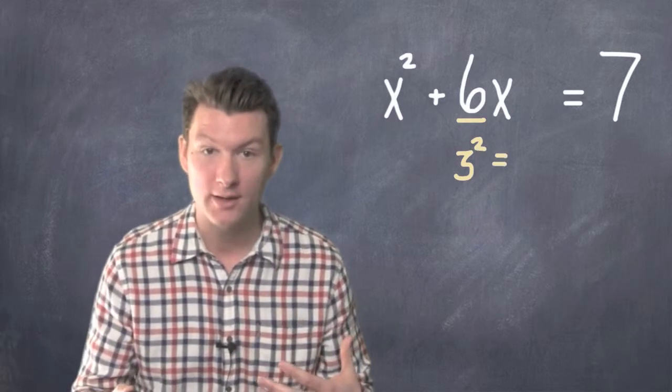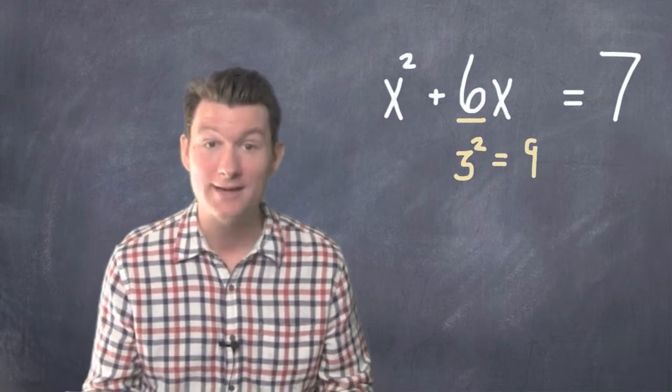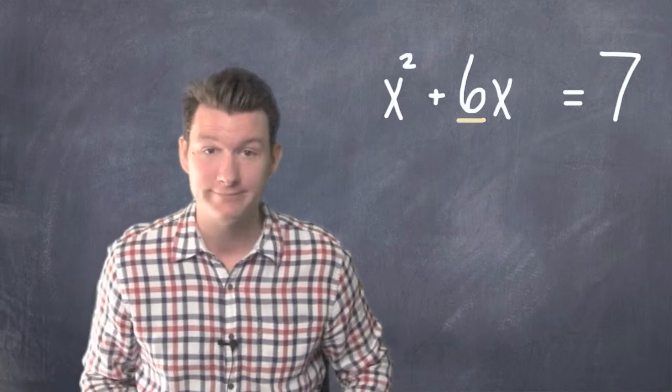then you square the 3. So, 3 squared is 9, and we're going to take 9, and we're going to add it to both sides of the equation. That's it.